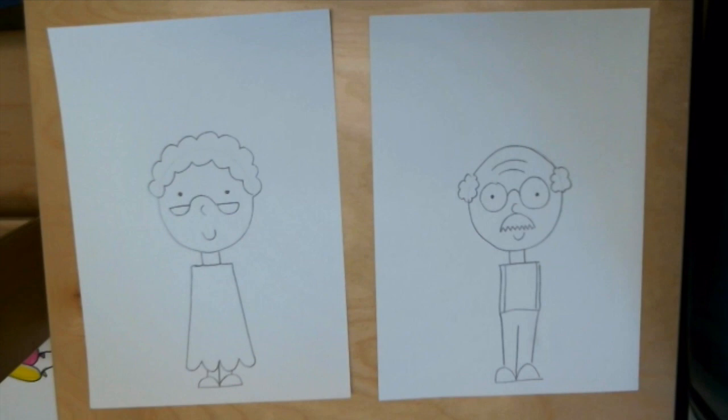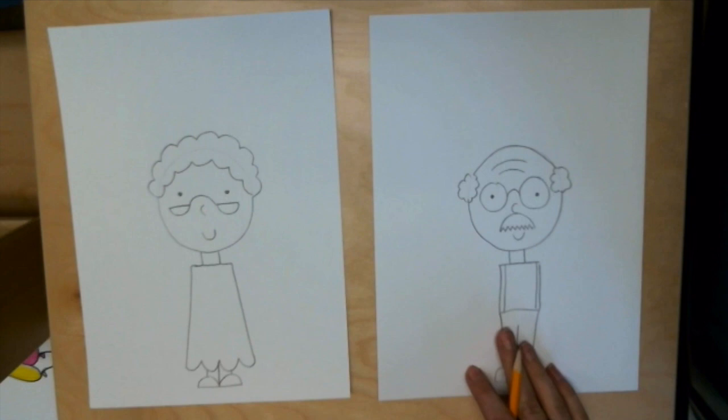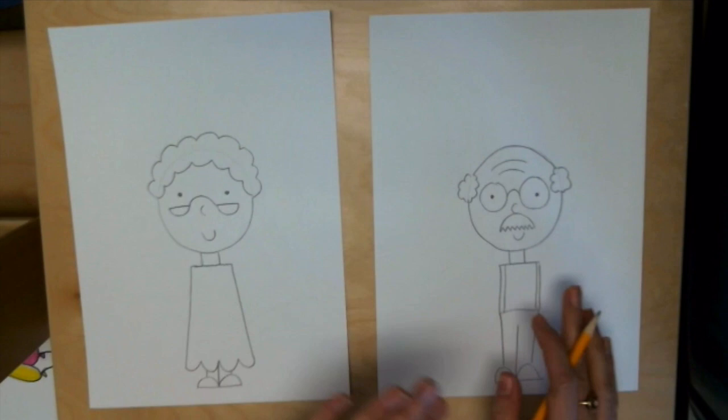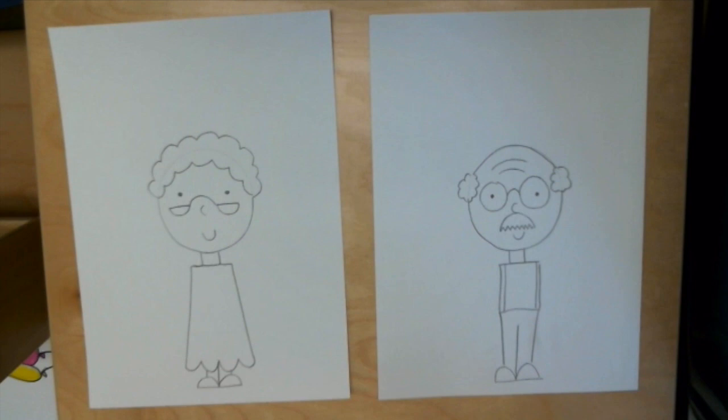Okay so now I'm gonna add their arms and I'm also going to make one of them holding a cane and one of them holding a walker. Now I'm gonna draw the walker on the grandma and the cane on the grandpa but you can always switch them. If you're drawing yourself as a hundred year old lady but you want to have a cane instead of a walker you can absolutely make that change. Same with the old man. If you want him to have a walker you can draw the walker over here.